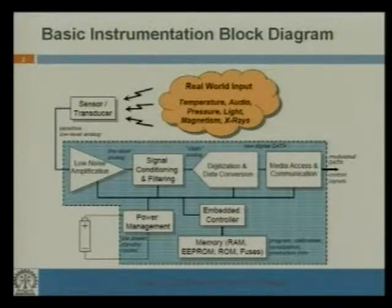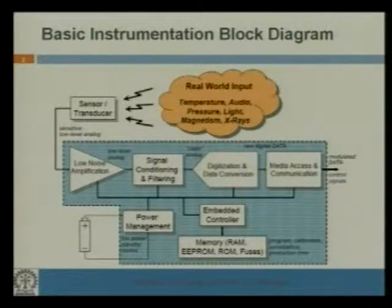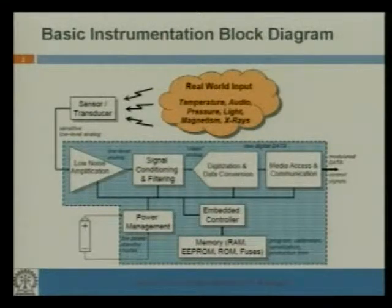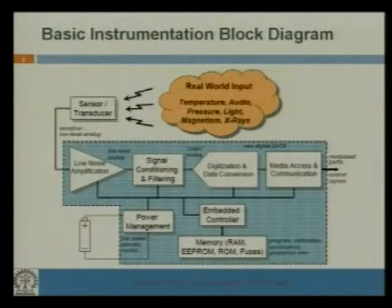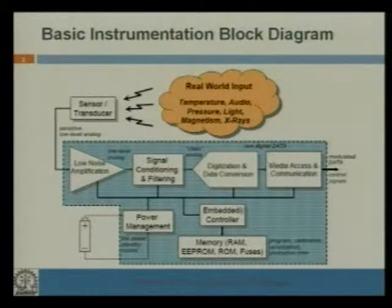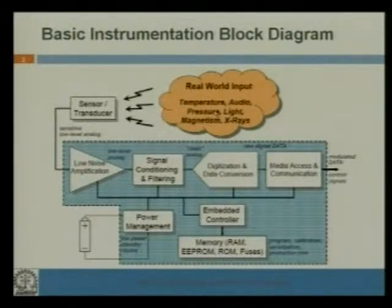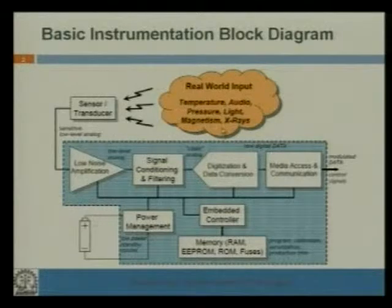This is a basic instrumentation block diagram. The instrumentation system basically consists of a sensor and transducers, then an amplifier — maybe a low noise amplifier — and then a signal conditioning circuit which will process the signals from sensors and transducers. After that, there will be digitization and data conversion, and then it will communicate with the external world. There will also be power management supplying power to associated blocks, and an embedded controller or memory. The sensor may be a temperature sensor, a pressure sensor, or some X-ray detection.